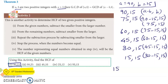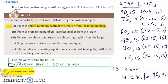So 15 is our highest common factor for the numbers 19 and 15. This is what is explained in the illustration. In the first activity, step one says: from the given two numbers, subtract the smaller from the larger number. So we took the two numbers and subtracted the smaller from the bigger number.